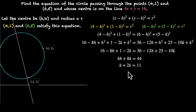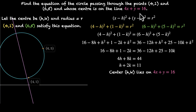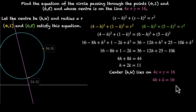That's one equation in h and k. Can we get one more? Yes. This line passes through the center, which means the center h comma k satisfies the equation 4x plus y equals 16. So we can plug h comma k into this equation and get 4h plus k equals 16. Now we have two equations and two variables and can solve for h and k.